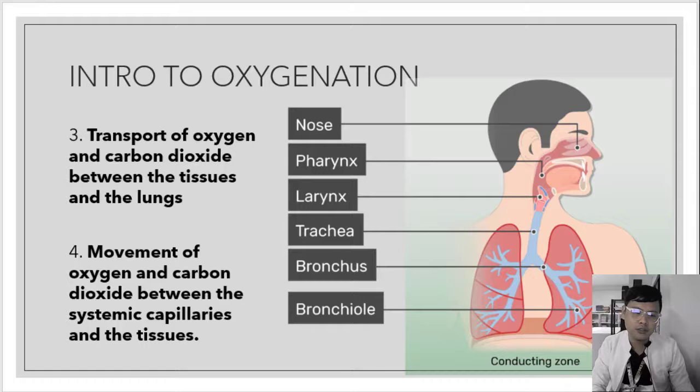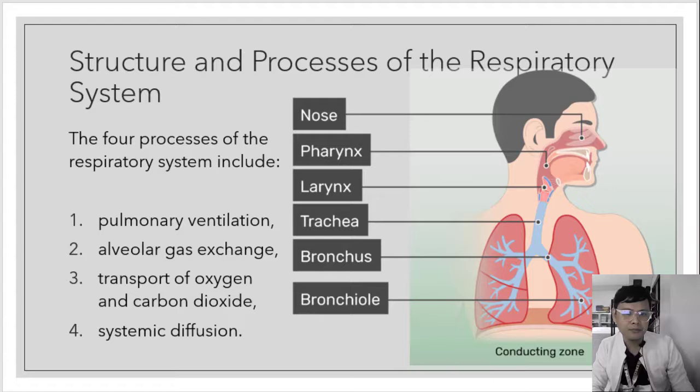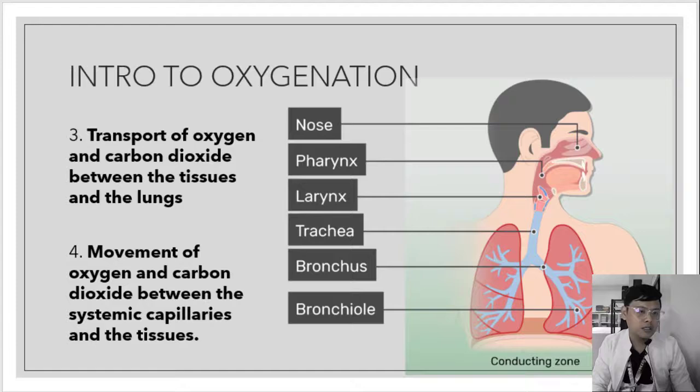The fourth component is the movement of oxygen and carbon dioxide between the systemic capillaries and the tissues — what we call systemic diffusion. To simplify: the four processes are pulmonary ventilation, alveolar gas exchange, transport of oxygen and carbon dioxide, and systemic diffusion.